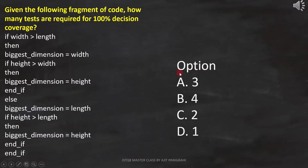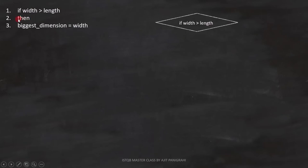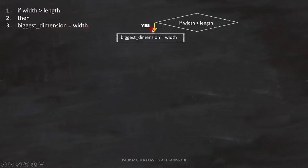Let's first analyze the code and parallelly draw the flowchart to get the answer. The first line is: if width is greater than length. Since it is a condition, we have represented it like this. The second and third line is: then biggest dimension equals to width. That means if this condition is true, biggest dimension equals to width. Since it is a statement, we represent it like this.